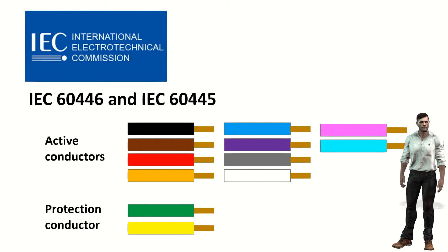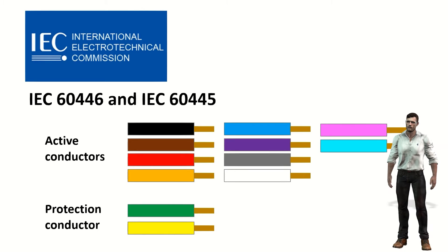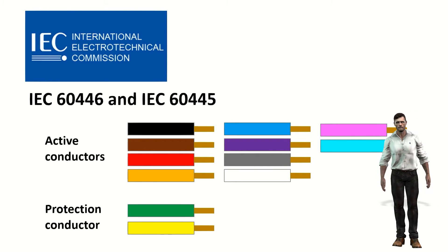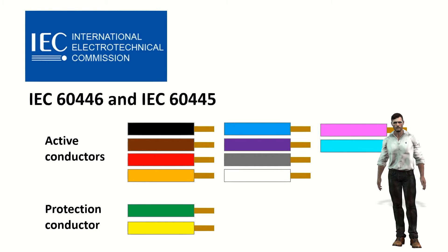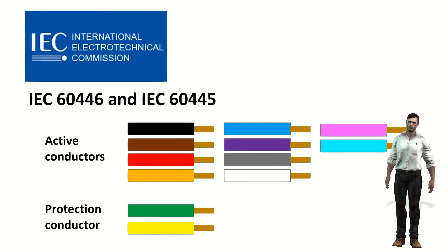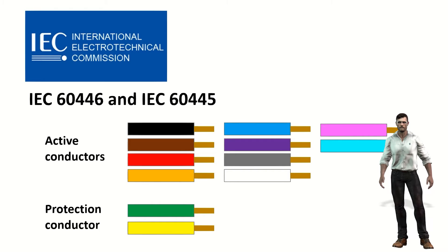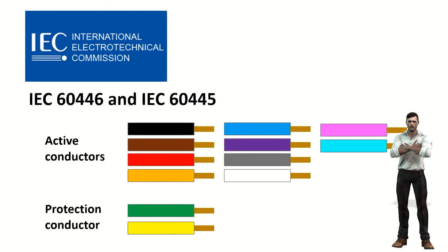As commented at the beginning, the International Electrotechnical Commission, IEC, through the IEC 60446 and IEC 60445 standards, establishes its own color coding of cables in electrical installations. This standard allows for active conductors colors such as black, brown, red, orange, yellow, green, blue, purple, gray, white, pink, or turquoise. Of which, green and yellow are reserved for the protective conductor.